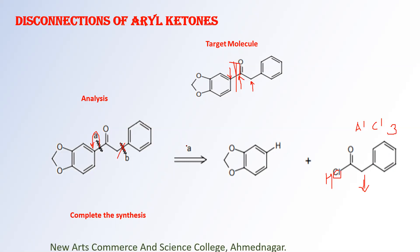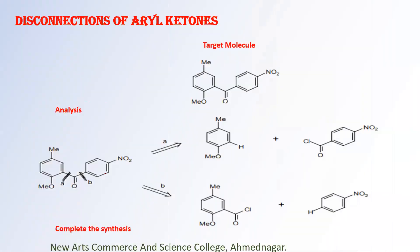Treat it with AlCl3 and write down the Friedel-Craft acylation reaction to get the target molecule. For the next target molecule, there is again a carbonyl group. This carbonyl group is attached to aromatic carbons on both sides — this is an aromatic carbon and this one is also an aromatic carbon. Which is the best disconnection? What type of ring do we need in a Friedel-Craft acylation? We need an electron-donating aromatic ring.